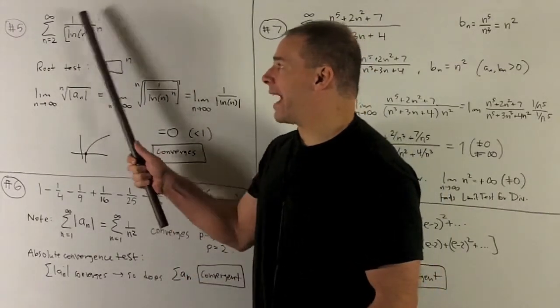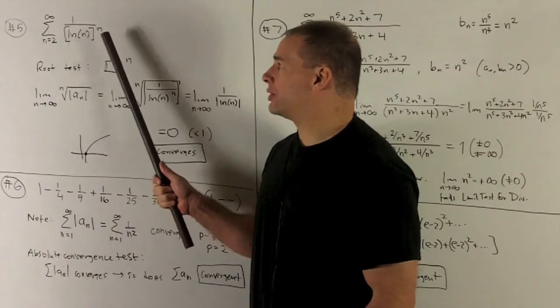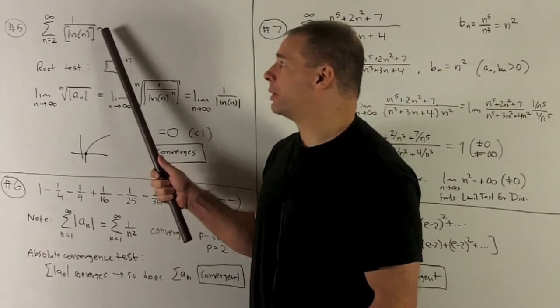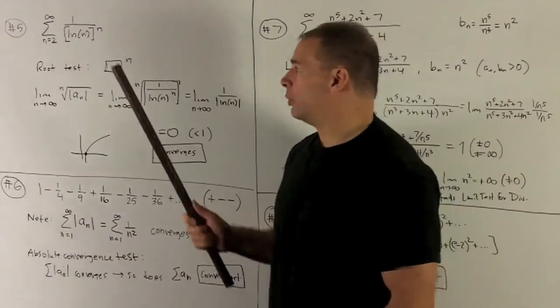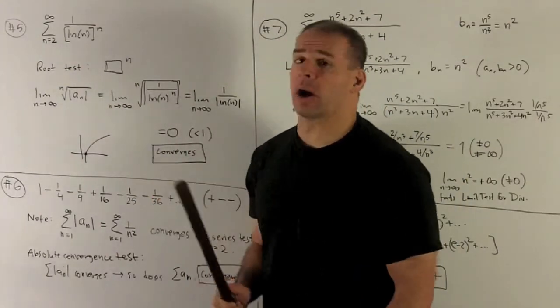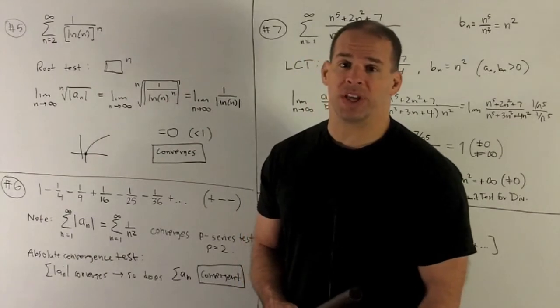Now note, this n here is on the outside of the function, so I can't use the exponent rule for logarithms which lets me bring it down in front. Instead, we'll note that this is an expression raised to the nth power, and that suggests that I use the root test.